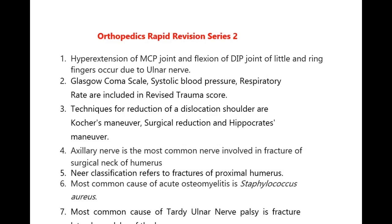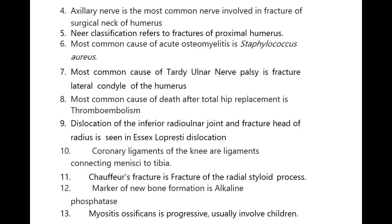Techniques for reduction of a dislocation of shoulder are Kocher's manual, surgical reduction, and Hippocrates manual. Axillary nerve is the most common nerve involved in fracture of surgical neck of humerus. Neer classification refers to fractures of proximal humerus. Most common cause of acute osteomyelitis is Staphylococcus aureus.